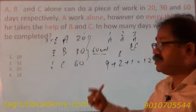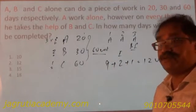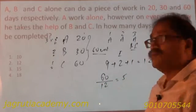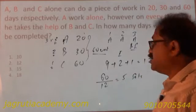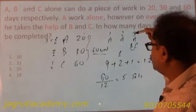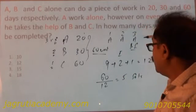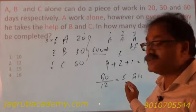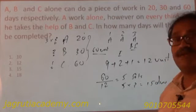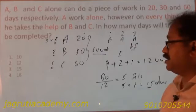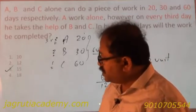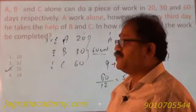To complete 60 units, how many such sets are needed? 60 divided by 12 is 5 sets. And 1 set consists of 3 days, so 5 sets consist of 5 into 3 which is 15 days. That means the work will be completed in 15 days. As per the answer posted in WhatsApp, 15 is your answer.